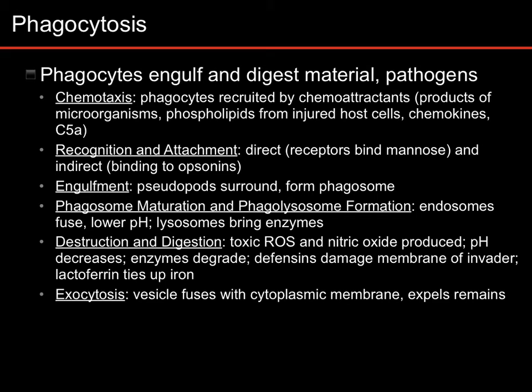So in general, these are the steps of phagocytosis. First, you have chemotaxis. The phagocyte has to have some way to find its way to the target.